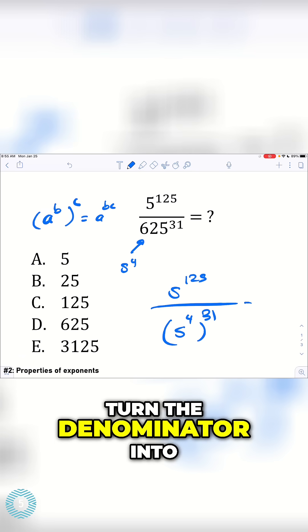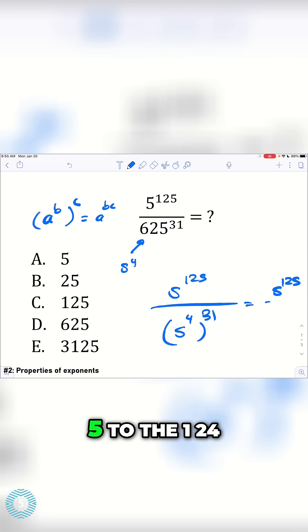So we can just turn the denominator into 5 to the 124, and that just ends up equaling 5. So if we divide that out, we just do 5 to the 125 minus 5 to the 124, because a to the b over a to the c is equal to a to the b minus c.